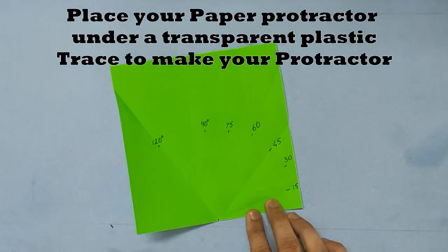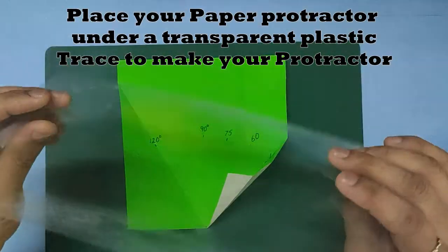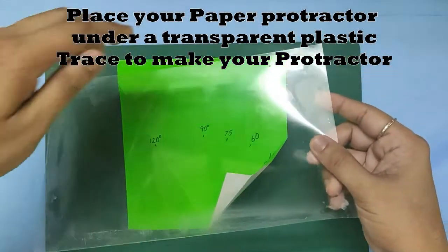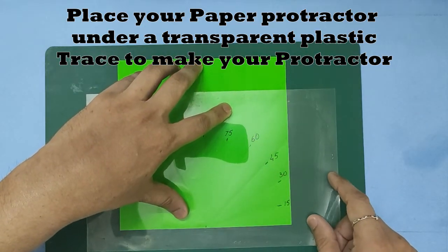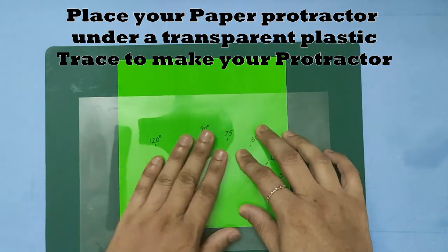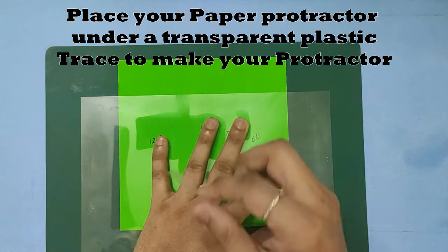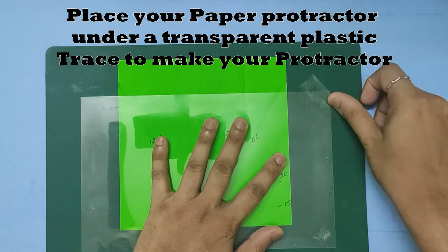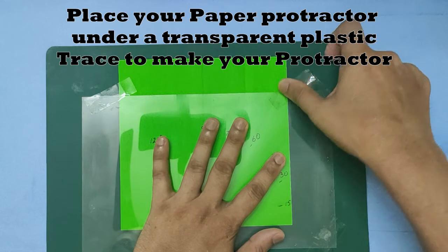Now we will take a plastic, any plastic will do, something which is stiff. Place it over the paper, attach it, and keep it firm with some cello tape. Stick the paper as well.